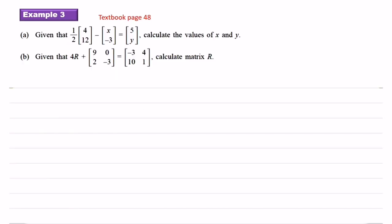Now we look at example 3. Given that 1 over 2 times the matrix 4, 12 minus s, negative 3 equals 5, y, calculate the value of s and y. So first I copy down the equation, next we multiply the element by 1 over 2. 1 over 2 times 4 equals 2, 1 over 2 times 12 equals 6. The others we just copy down. So we do the subtraction. 2 minus s, 6 minus negative 3 equals 5, y.